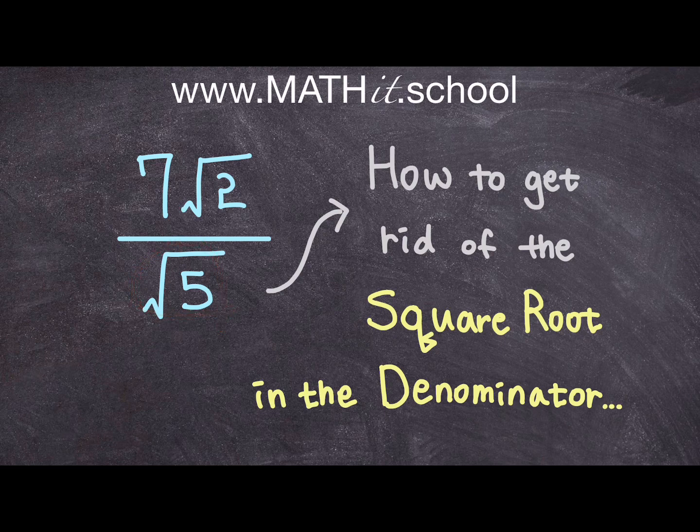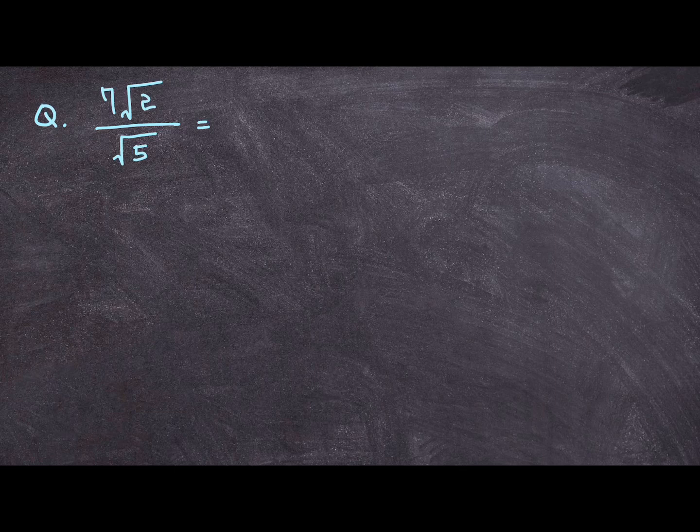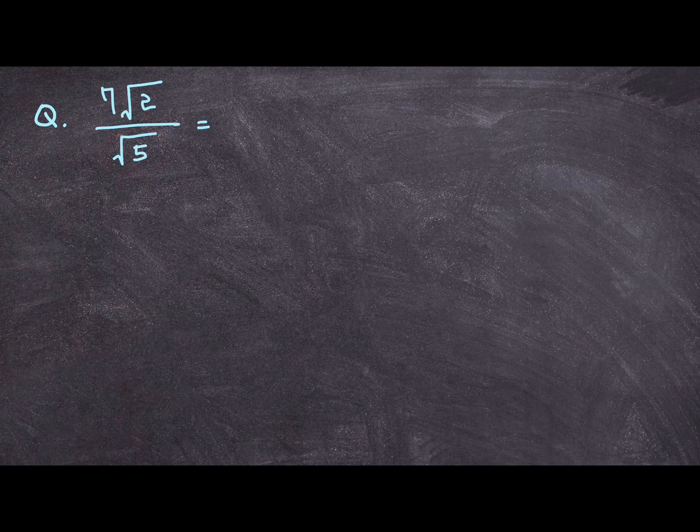And that process of getting rid of the square root expression or radical expression from the denominator of your fraction is also known as rationalizing the denominator, but I won't go into details as to why or the terminology and everything else. I am just going to focus on problem solving for the purpose of this video and of my channel. So let's get started on this question. 7 square root of 2 over square root of 5. How do you get rid of that square root of 5 or how do you rationalize this radical? Now I'm going to show you how.